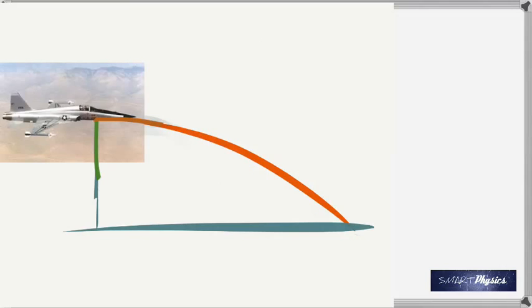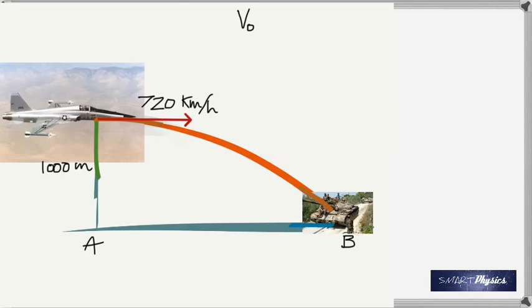To do that, the most important thing to remember is that because the bomber is flying horizontally, its initial vertical velocity is zero. Although its horizontal velocity is 720 kilometers per hour, it's not moving vertically.